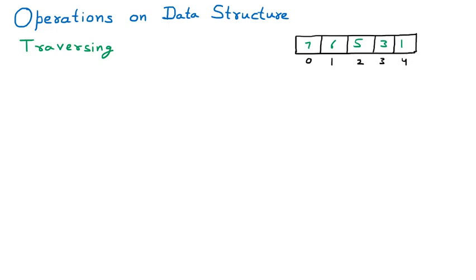In an array, we apply some kind of loop. We say the array will start from zero and go till four and display all the elements. Displaying the elements of an array is an example of traversing — we start from the first element and display all elements one by one. Traversing means we are going through all the elements and doing some task: maybe adding those elements, displaying them, or using them.